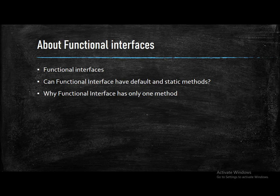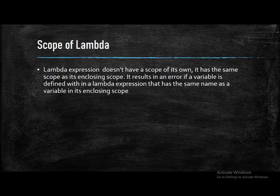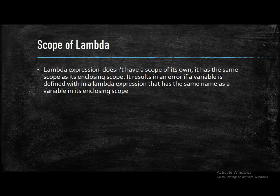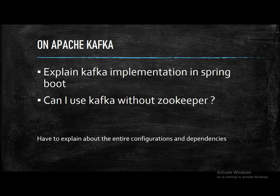The next section is about the scope of lambda. Basically, a lambda doesn't have its own scope — it inherits the enclosing scope. So if you declare a variable with the same name inside a lambda that already exists in the outer scope, you will get a compilation exception.